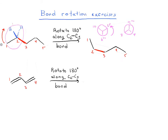The bond between carbon 2 and carbon 3 doesn't change. Originally, let's call this H_A — if we looked at it from this direction, H_A would be at 2 o'clock. When we rotate it 180 degrees, H_A moves to 8 o'clock, so looking straight on, H_A becomes a dash. H_B, which starts at 10 o'clock —